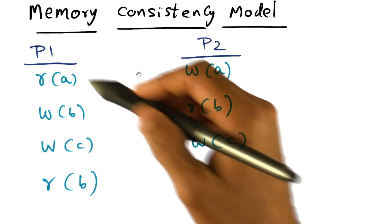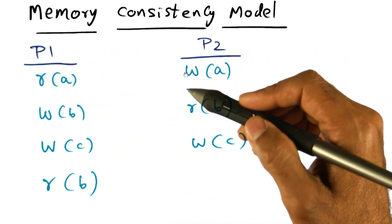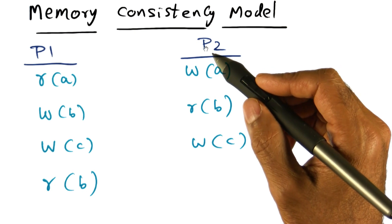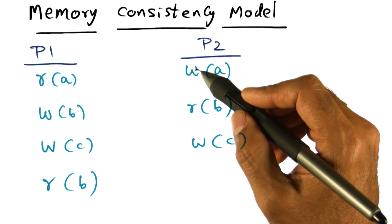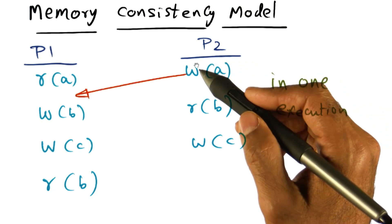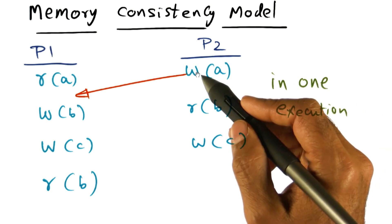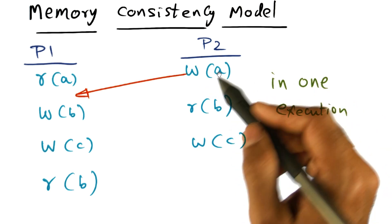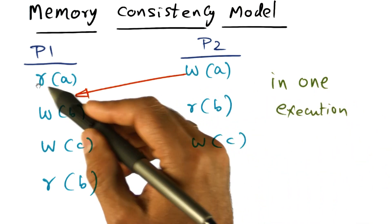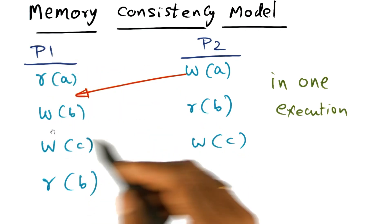And we know that processor P1 accessing memory and processor P2 accessing memory are completely independent of one another. And therefore, it is possible that in one execution of P1 and P2 this particular access of writing into memory location A happens after reading memory location A on P1 in one execution.